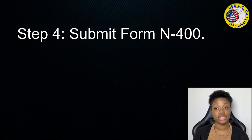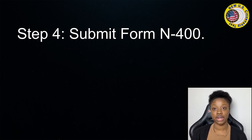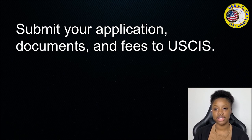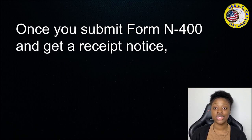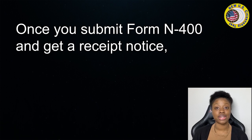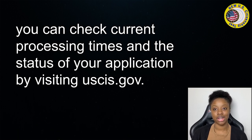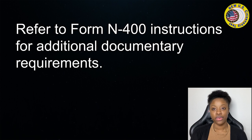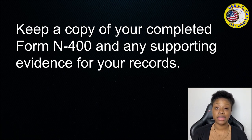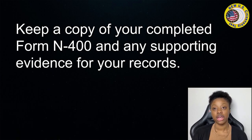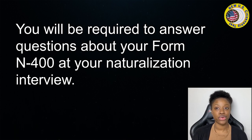Step 4: Submit your Form N-400, along with your documents and fees to USCIS. Once you submit your Form N-400 and get a receipt notice, you can check current processing times and the status of your application by visiting USCIS.gov. Refer to Form N-400 instructions for additional documentary requirements. Keep a copy of your completed N-400 and any supporting evidence for your records, as you will be required to answer questions about your N-400 at your naturalization interview.